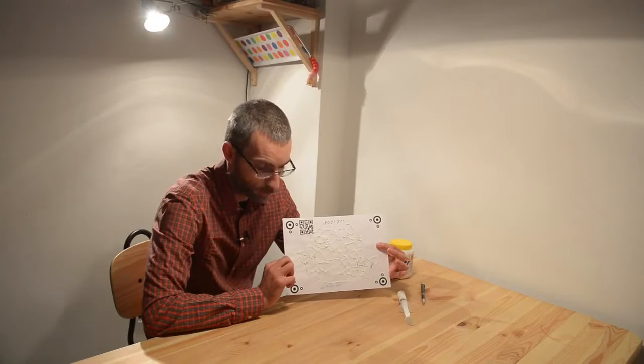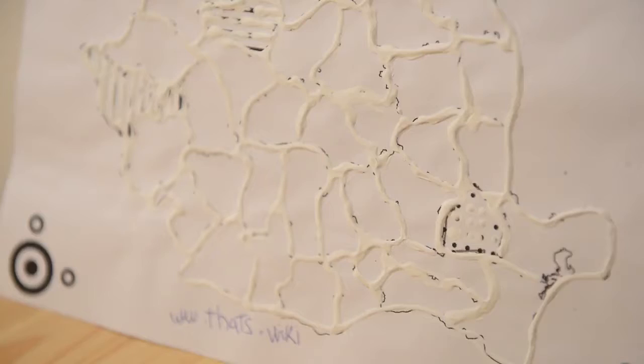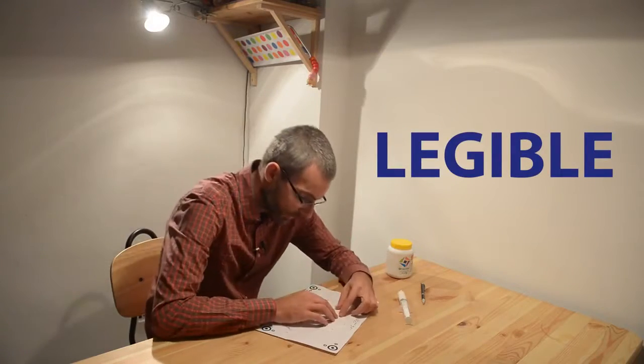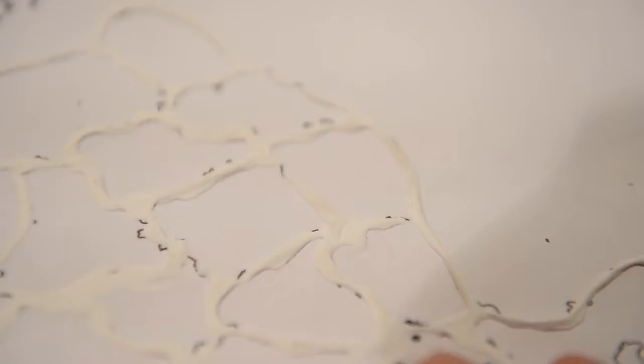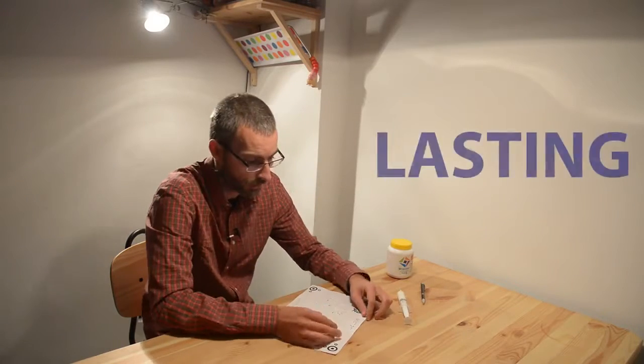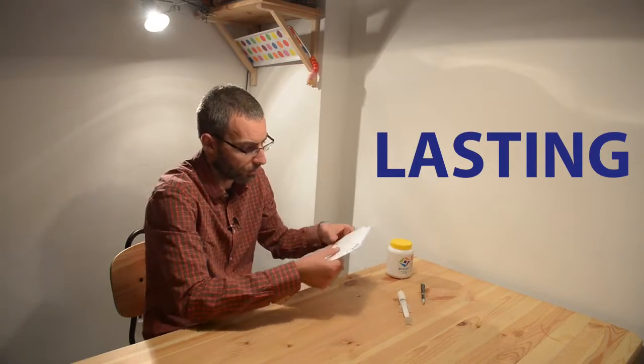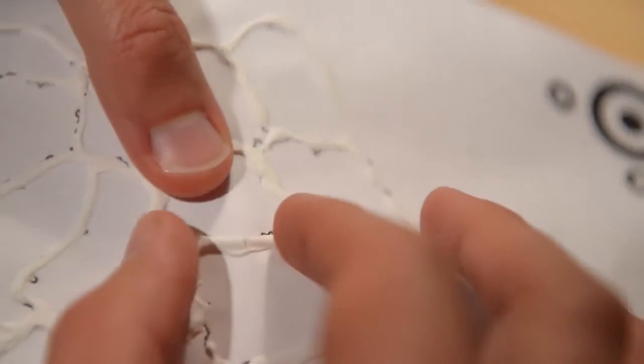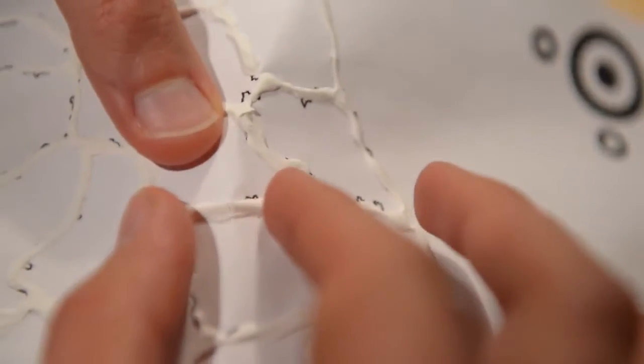This is how a tactile drawing made with glue looks. It has fine relief, is solid, and doesn't come off easily. It's rigid and breakable, but it doesn't come off - it just breaks.